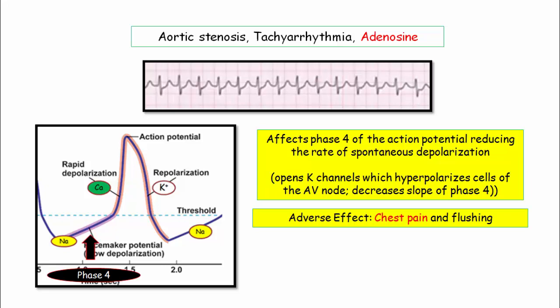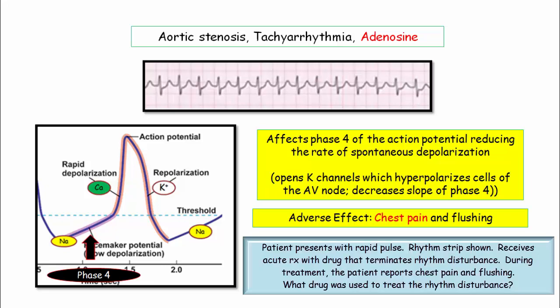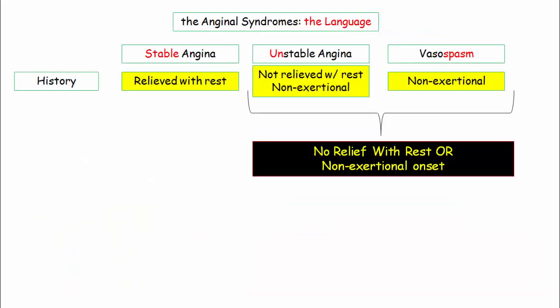Be aware that adenosine, used to treat SVT, can cause chest pain and flushing as a typical adverse effect. In those vignettes, the presence of chest pain will be your key to determining the agent used to terminate the arrhythmia. You will be shown a graphic demonstrating SVT, and the question will state that a medicine was used to terminate the rhythm disturbance — that medicine caused chest pain and/or flushing — and ask for the medication or its mechanism of action. Chest pain and flushing are your clinical clues.